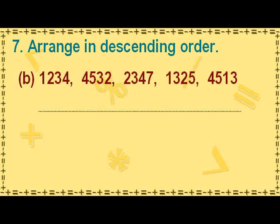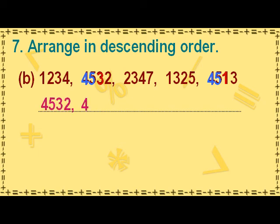In the given numbers, the digits 4 and 5 are the same in the thousands and hundreds places of 4532 and 4513. So we look at the tens place. The digit 3 in the tens place of 4532 is greater than the digit 1 in the tens place of 4513. So 4532 is greater than 4513, and we begin the descending order with 4532 followed by 4513.